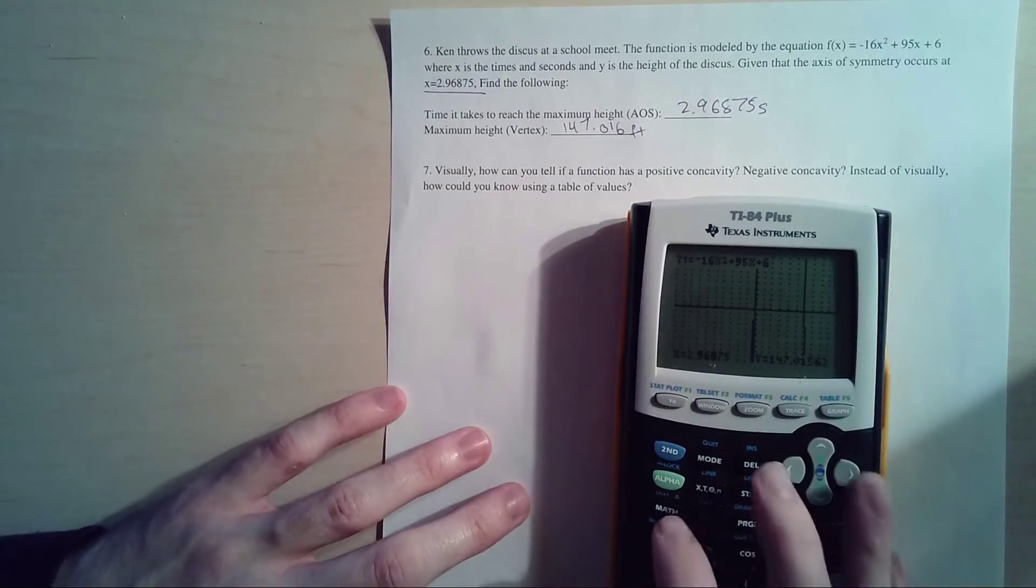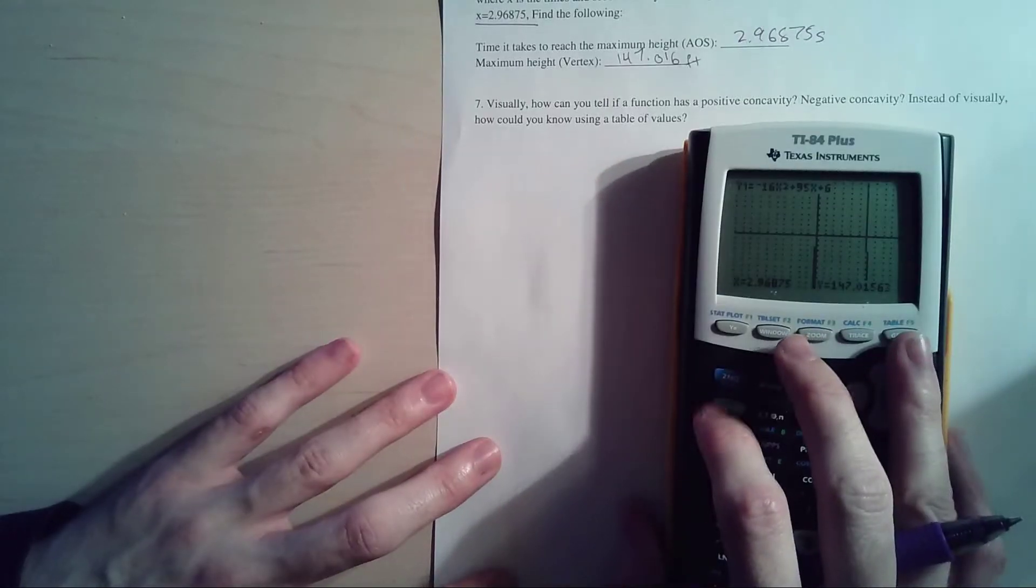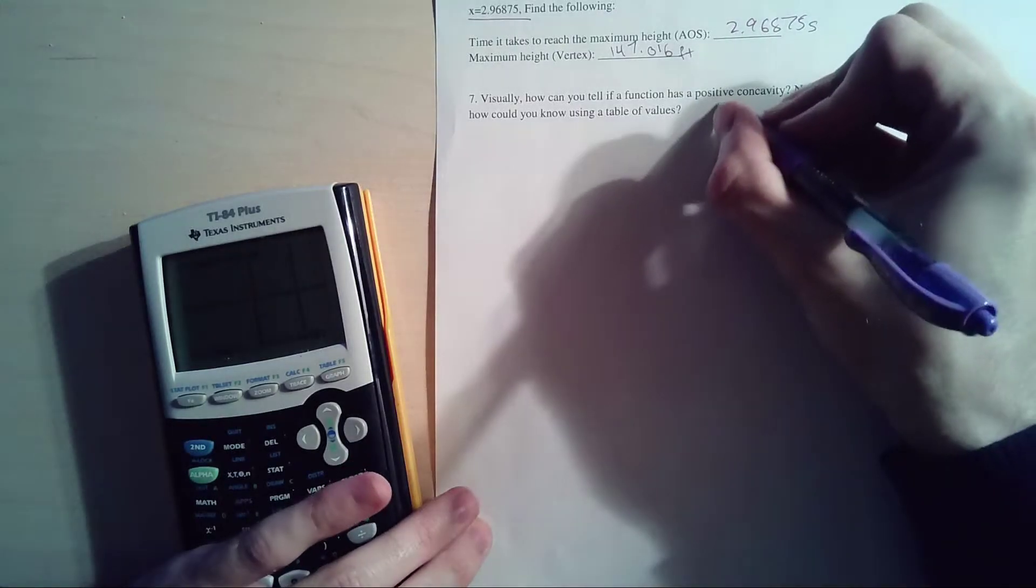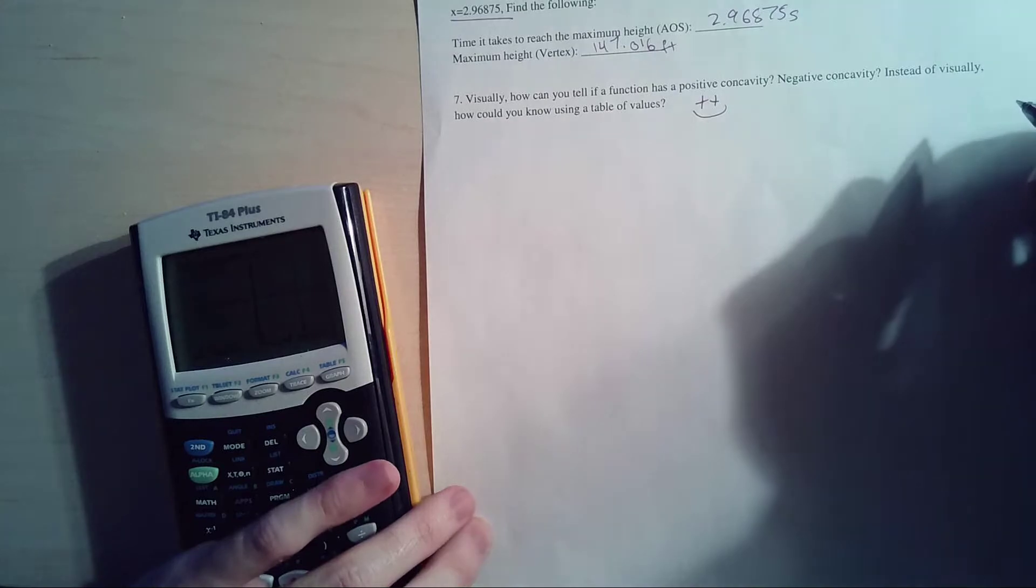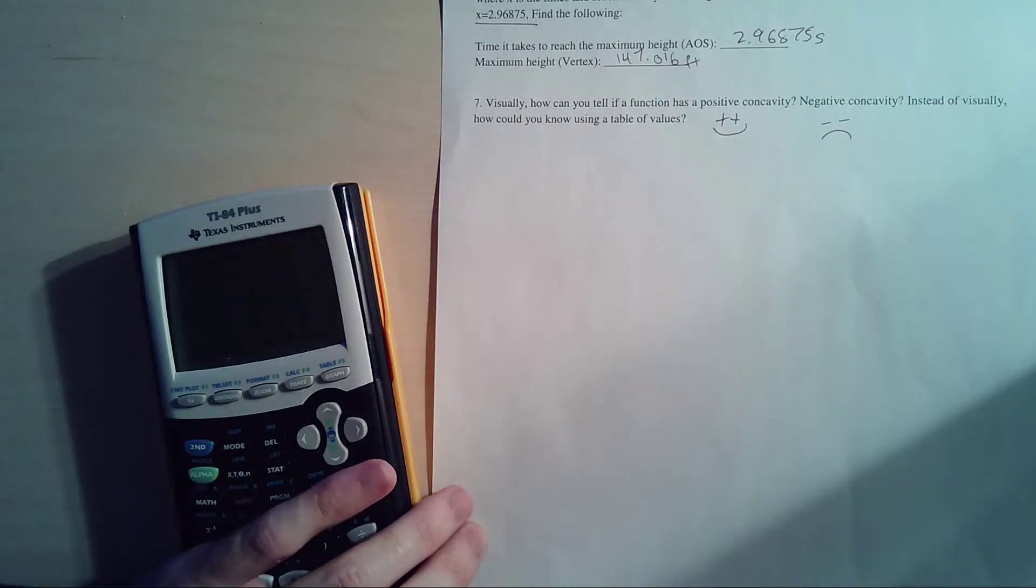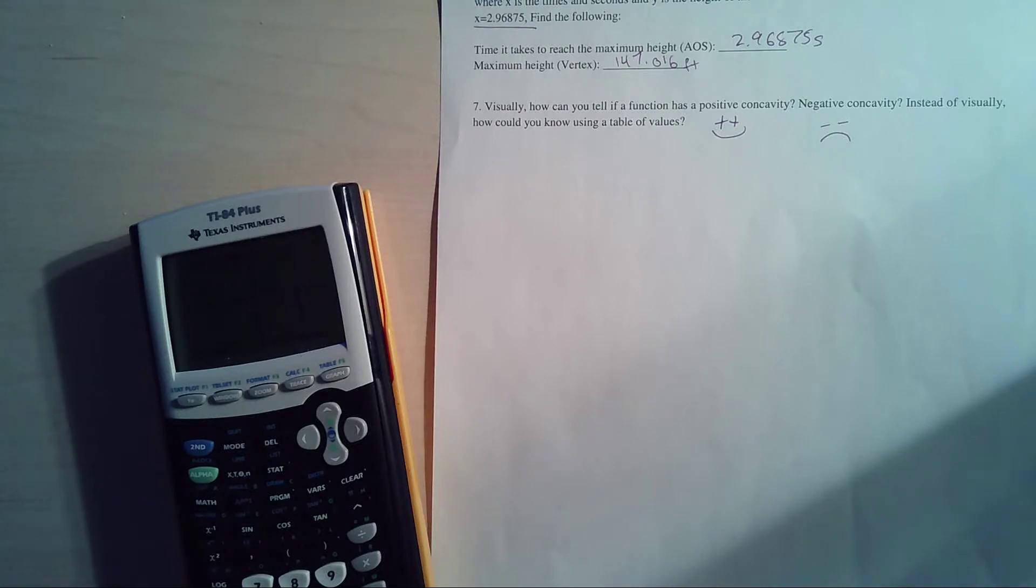Okay, number seven: Visually, how can you tell if a function has positive concavity? Easy, it's a happy face. How can you tell if it's a negative concavity? Easy, if it's a frowny face. Instead of visually, how could you know using a table of values?